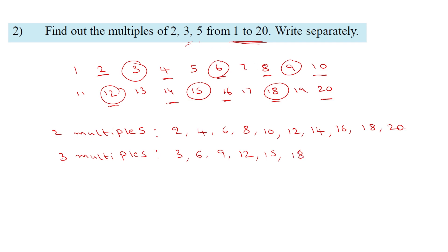Next, the multiples of 5 from 1 to 20. The multiples of 5 are: 5, 10, 15, 20.